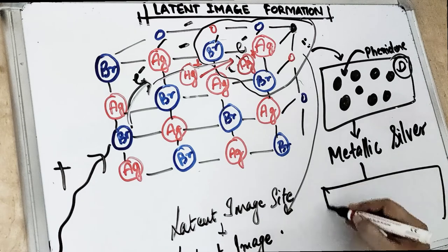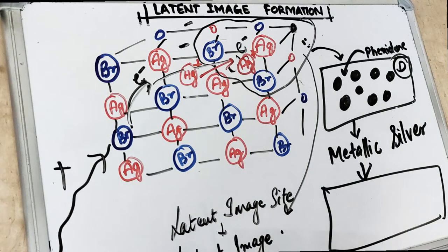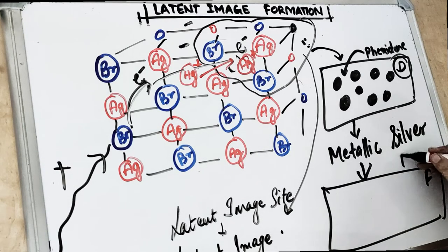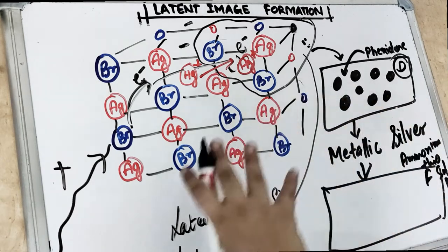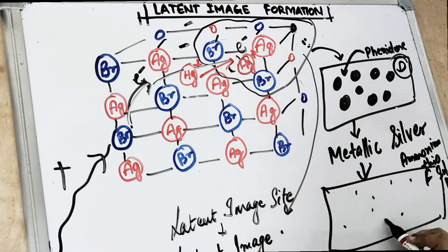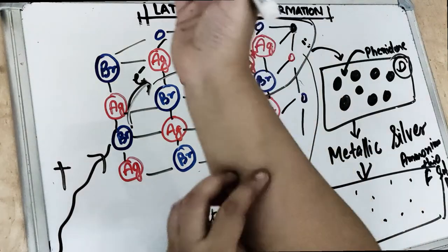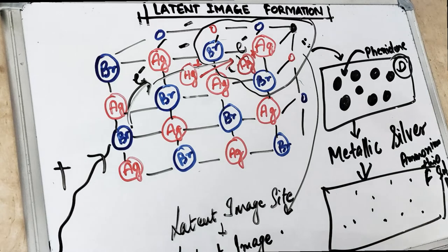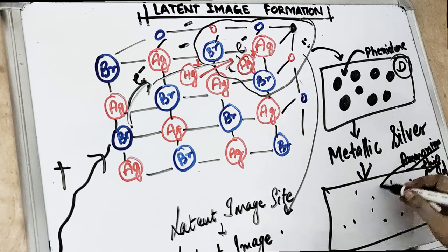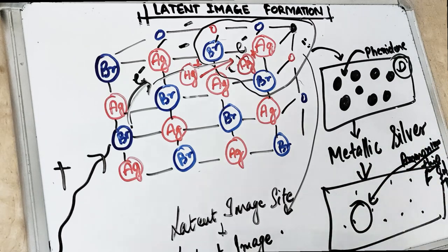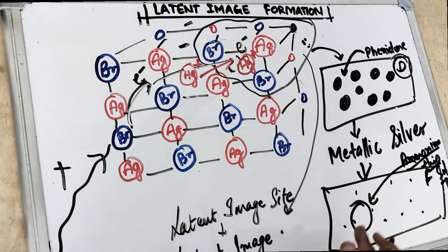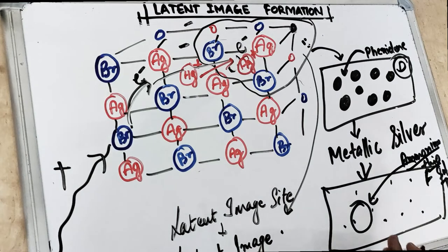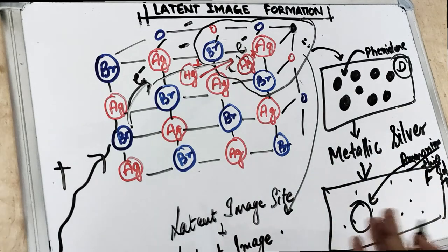Now we put it into the fixer. In the fixer we have got ammonium thiosulphate. This ammonium thiosulphate acts on the crystals which are not exposed — all the area wherein the x-ray did not strike, all the areas beneath the bone, beneath the dense areas. It acts on the silver and makes silver thiocyanate. Once we wash it with water, all the silver thiocyanate is washed out.